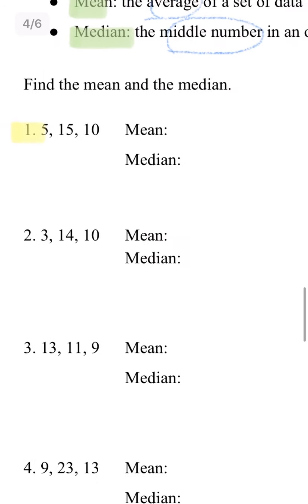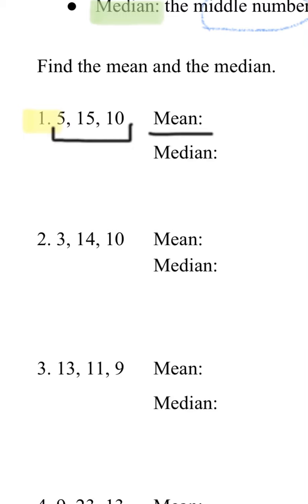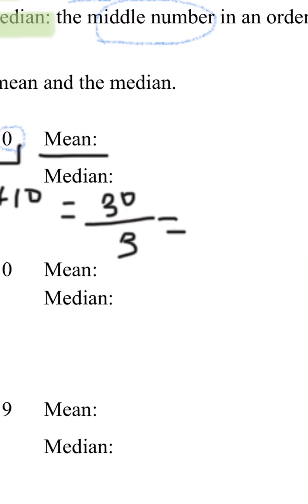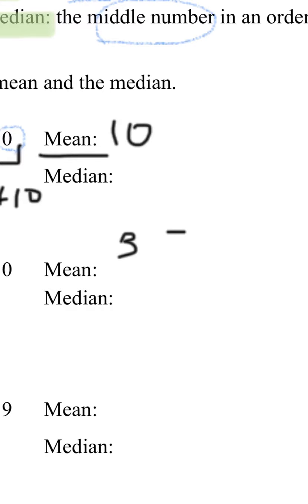Let's look at number one — the mean. First you have to get the sum of these three numbers. So you do 5 plus 15 plus 10, which equals 30. Then since you got the sum, you divide it by three, because there are three numbers in the set. So 30 divided by 3 equals 10. You have a mean of 10.